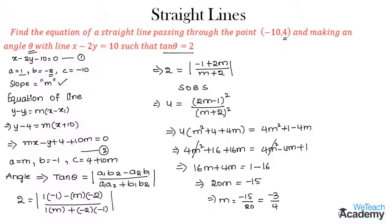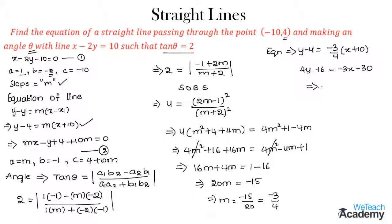So the slope of equation 2 is m equals minus 3/4. Substituting into the line equation: y minus 4 equals (minus 3/4)(x plus 10). Multiplying through: 4y minus 16 equals minus 3x minus 30, giving 3x plus 4y plus 14 equals 0. This is the equation of one line.